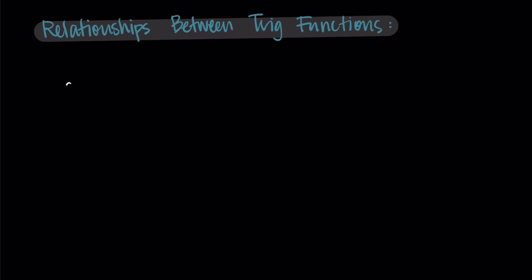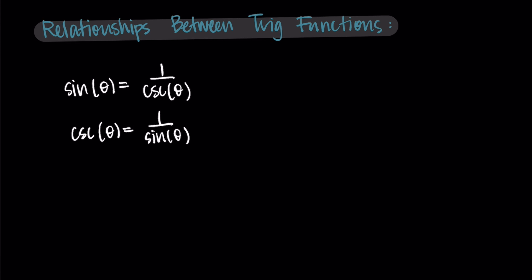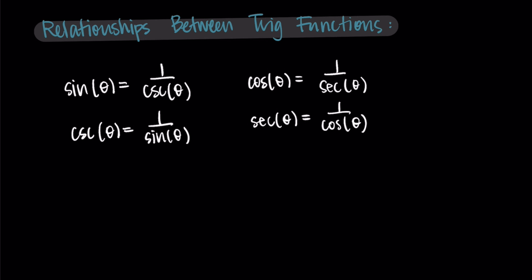We can say that sine is equal to one over cosecant of theta. This should initially seem pretty reasonable since we know that sine and cosecant are reciprocals of each other. Then similarly, cosecant of theta is equal to one over sine of theta. Our second grouping has that cosine of theta is equal to one over secant of theta. Similarly, secant of theta is equal to one over cosine of theta. This should also make sense intuitively because cosine and secant are reciprocals of each other.